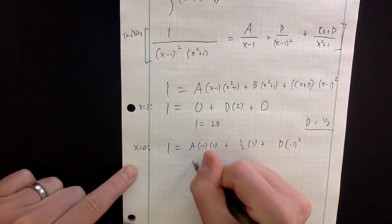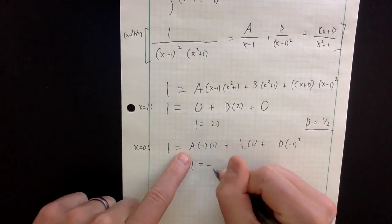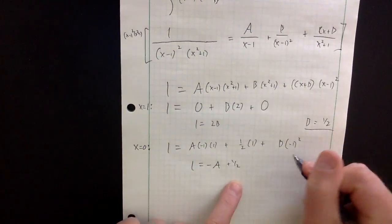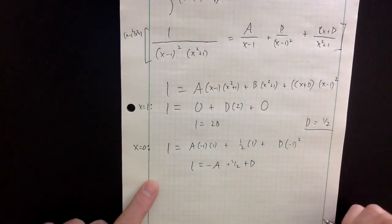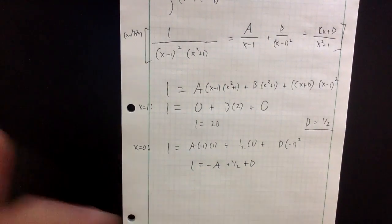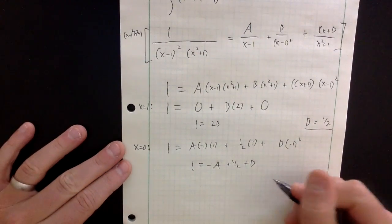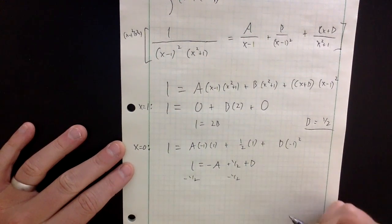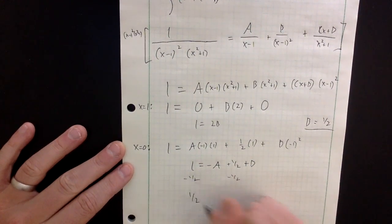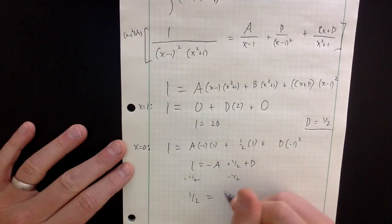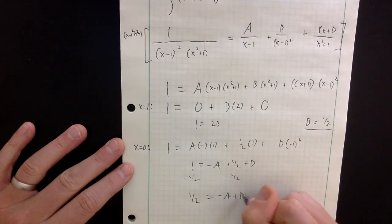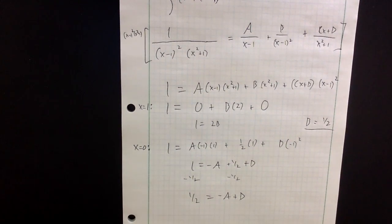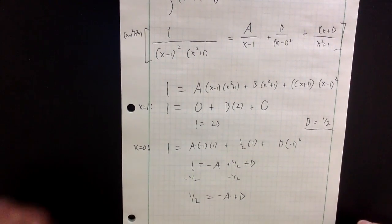Simplifying: 1 equals minus A plus one half plus D. Subtracting one half from both sides gives one half equals minus A plus D. I have two unknowns, so I can't solve this right away — I'll set this aside as equation one.